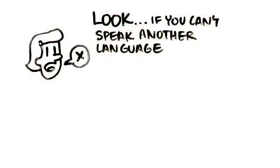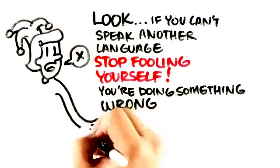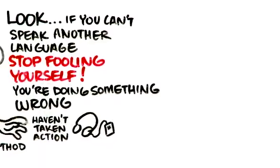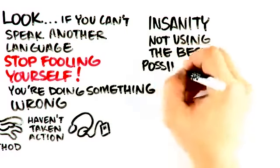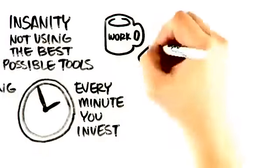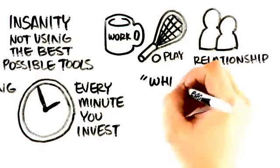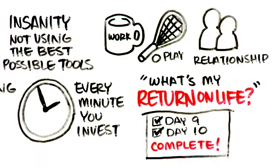Look, if you can't speak another language, stop fooling yourself. You're doing something wrong. Either you haven't decided to take action on your goal or you're using the wrong method. The definition of insanity is doing the same thing and expecting a different result. In this case, it's not using the best possible tool to get the job done quickly. For every minute you invest in work during play or in your relationships, you always need to think about, what is my return on life? What is your return on life for completing this program? You don't want to miss out on this opportunity.